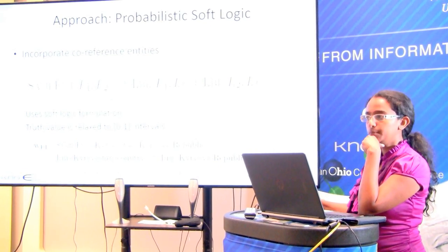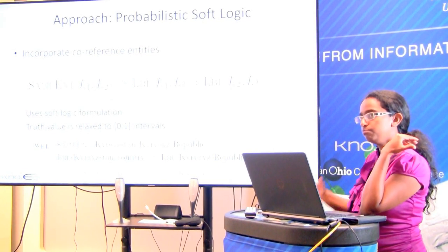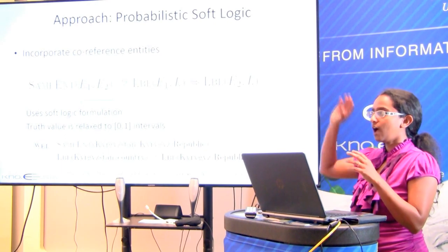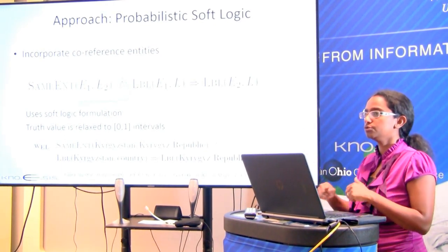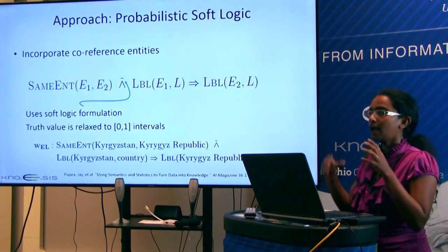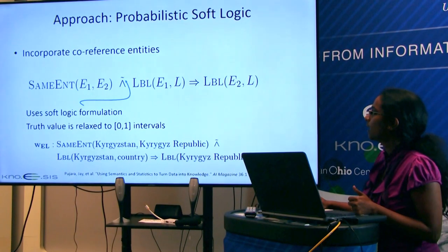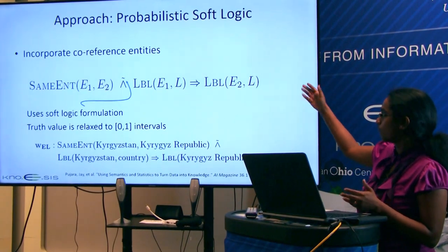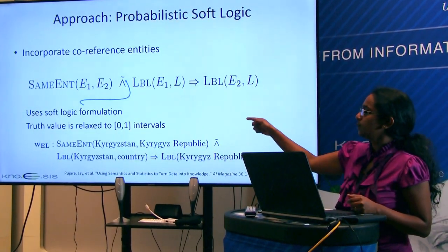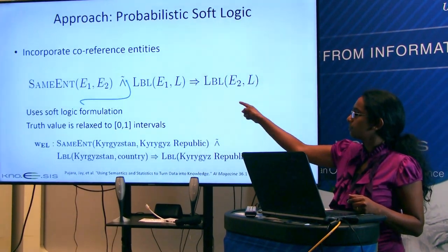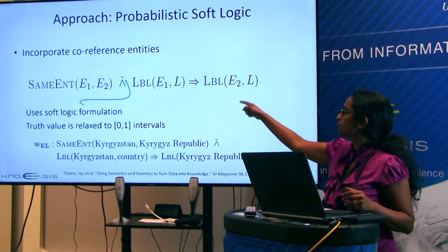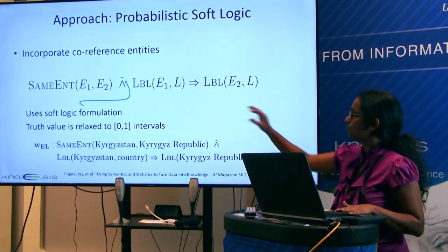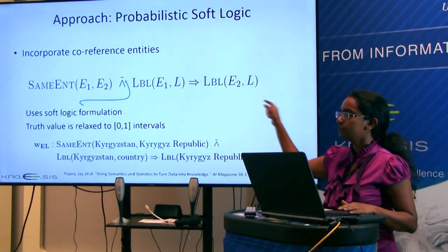Coming back to the slides: one PSL rule for coreference is — if we know E1 and E2 are the same entity, and we know the type of E1 is L, then we know the type of E2 is L. They define these kinds of rules and assign a continuous weight value to each rule and to each atom.